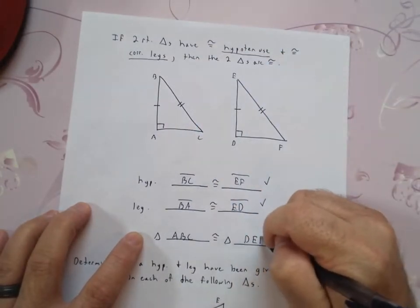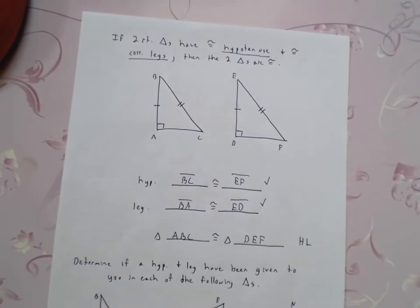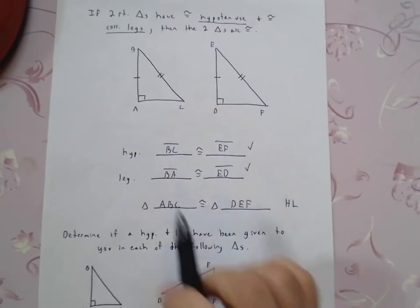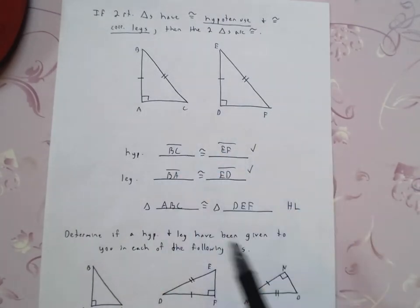Again, always keep an eye on that order. Just like when we were going through proofs and when we were writing out corresponding, everything has to match when you're dealing with congruent triangles.